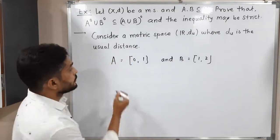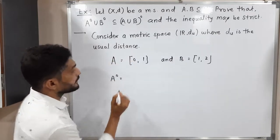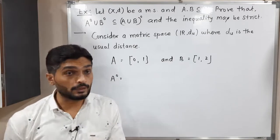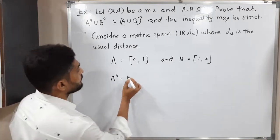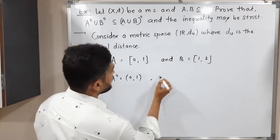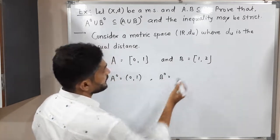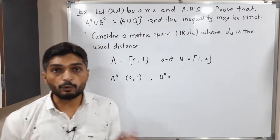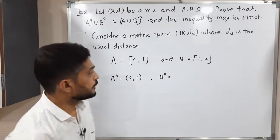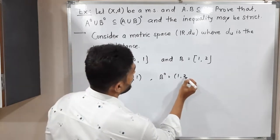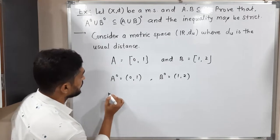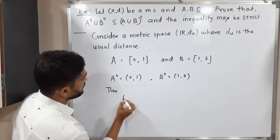The interior of A means we consider interior points, so boundary points are not included. The interior of A is the open interval (0, 1). Similarly, the interior of B does not contain boundary points 1 and 2, so the interior of B is the open interval (1, 2).